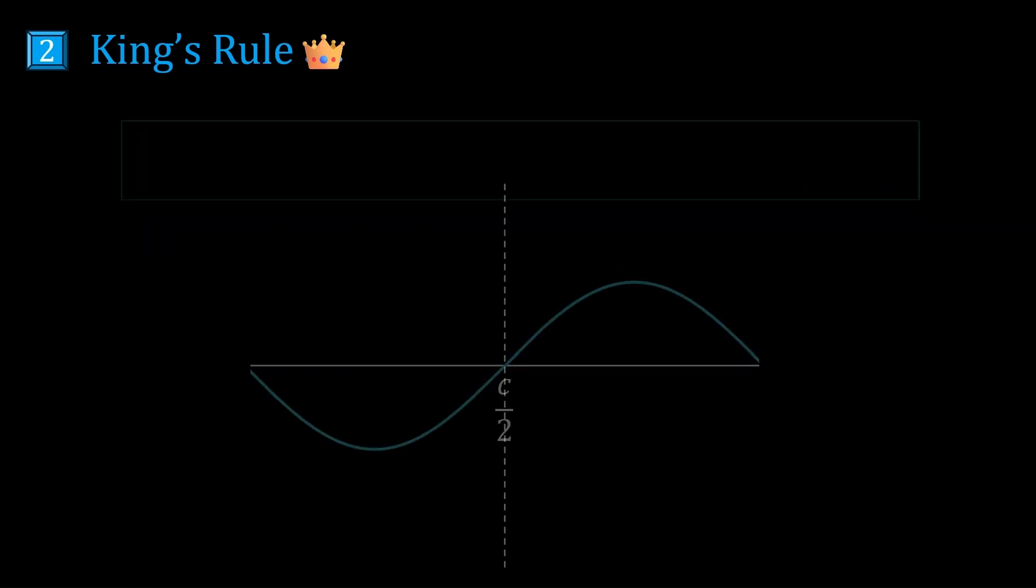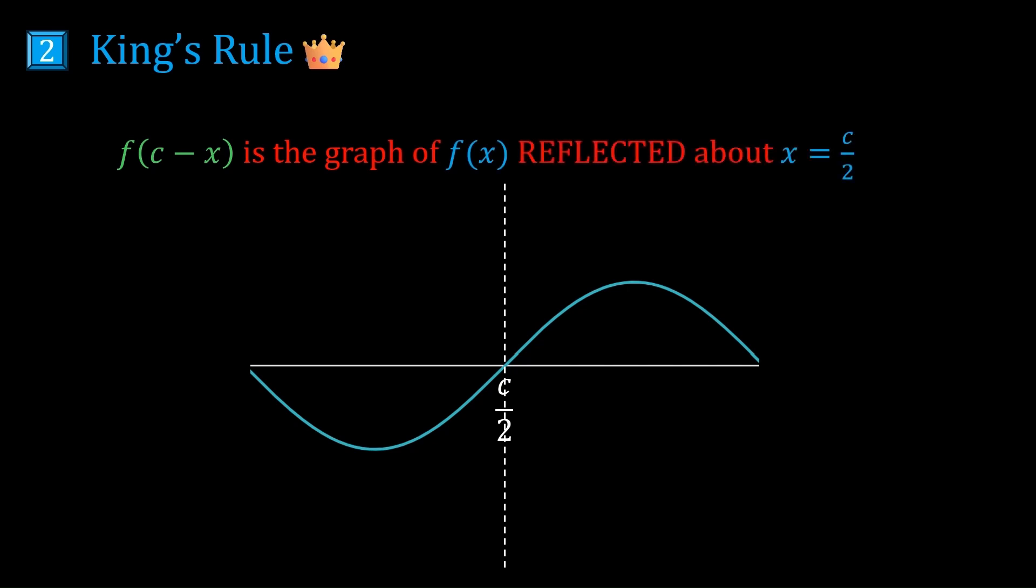f(c - x) is the graph of f(x) reflected about c/2, which is a vertical line. And if you don't understand why this is true, well just check out the video in the description. It explains it really simply.